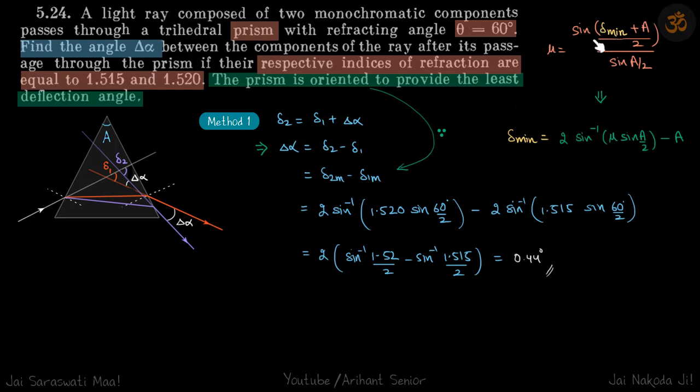And if you differentiate both sides, you will get D mu term and here you will get D delta term. So because D mu is small, we can get change in delta minimum by just differentiating and putting the value of D mu as the difference of this, so that's how we'll do by our second method.